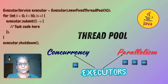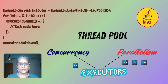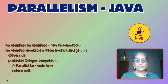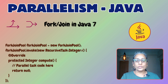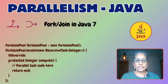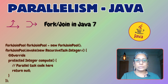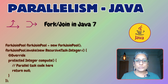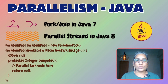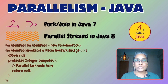Java also does a great job with parallelism. The Fork/Join framework, introduced in Java 7, is designed for tasks that can be split into smaller sub-tasks. Java 8 brought in parallel streams, making it even easier to process collections concurrently.